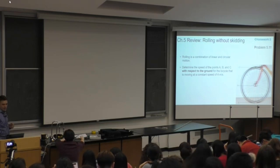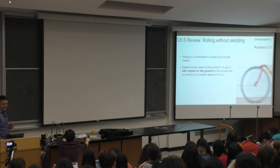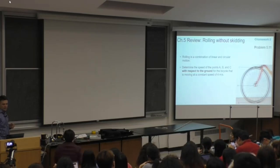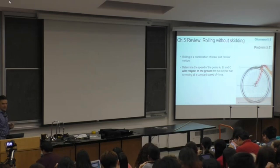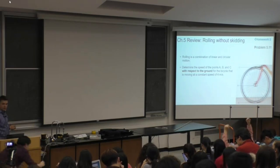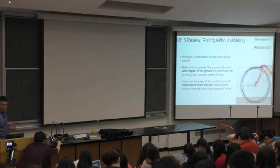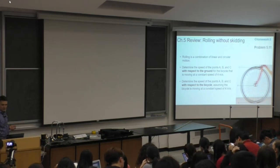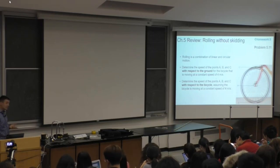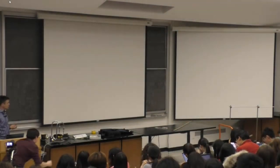There was a question, problem 5.11, from the fifth homework, which was asking to determine the speeds of point A, B, and C with respect to the ground for a bicycle moving at a constant speed of 4 meters per second. It also asks you to determine the same speed of those points relative to the bicycle — so two different frames of reference.